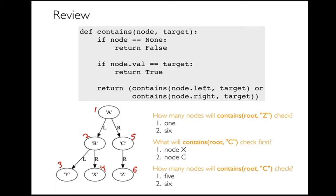It turns out that when I'm searching for Z, it's going to be just as slow, because Z is really in that last place I checked. So I'll return true, but only after I've already looked at everything. What if I'm searching for C? The real challenge is that I go deep on the left-hand side before I get to C. So even though C is pretty near the root, I'm going to end up checking X before I get to C.